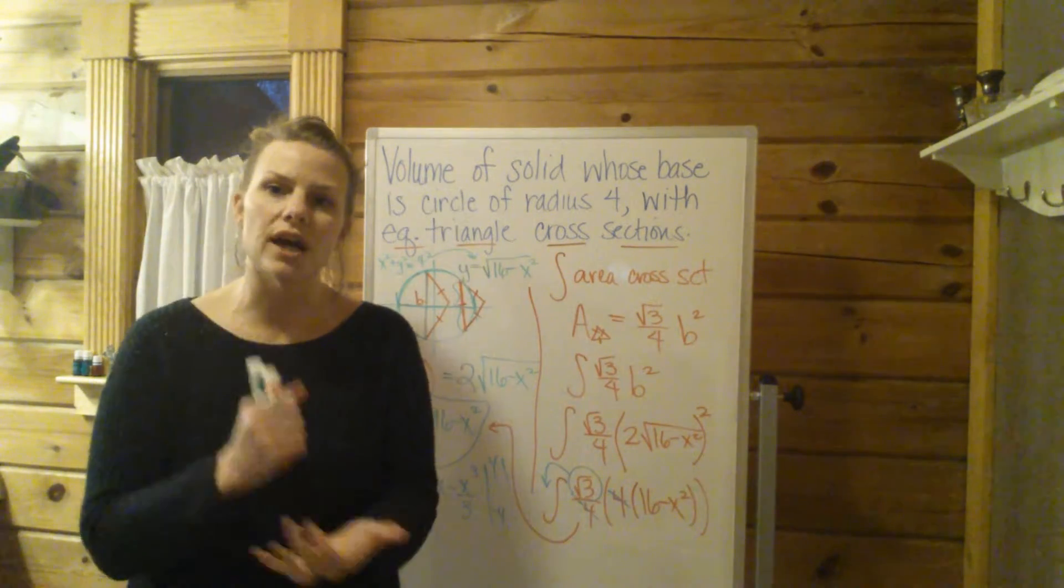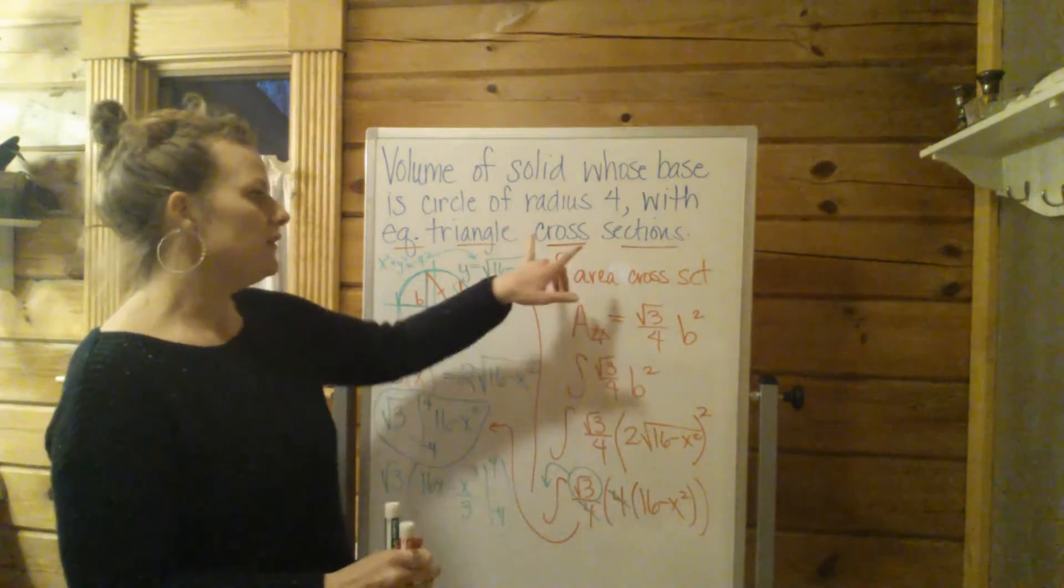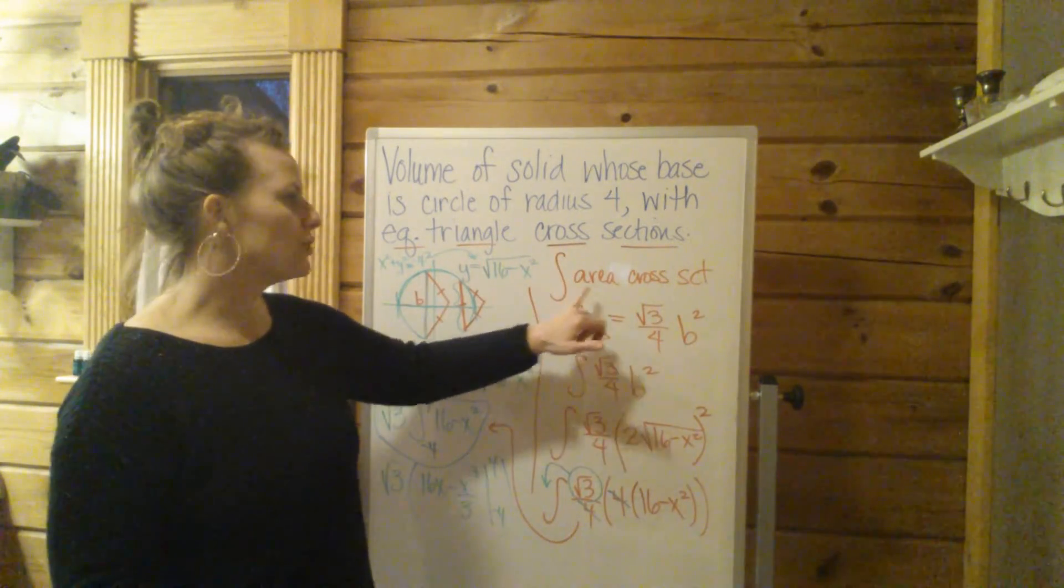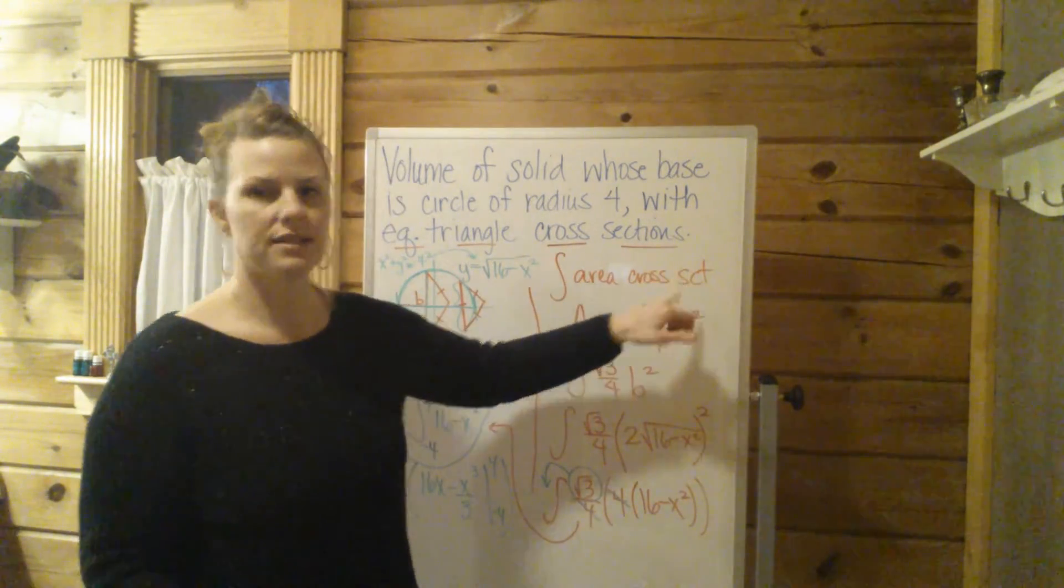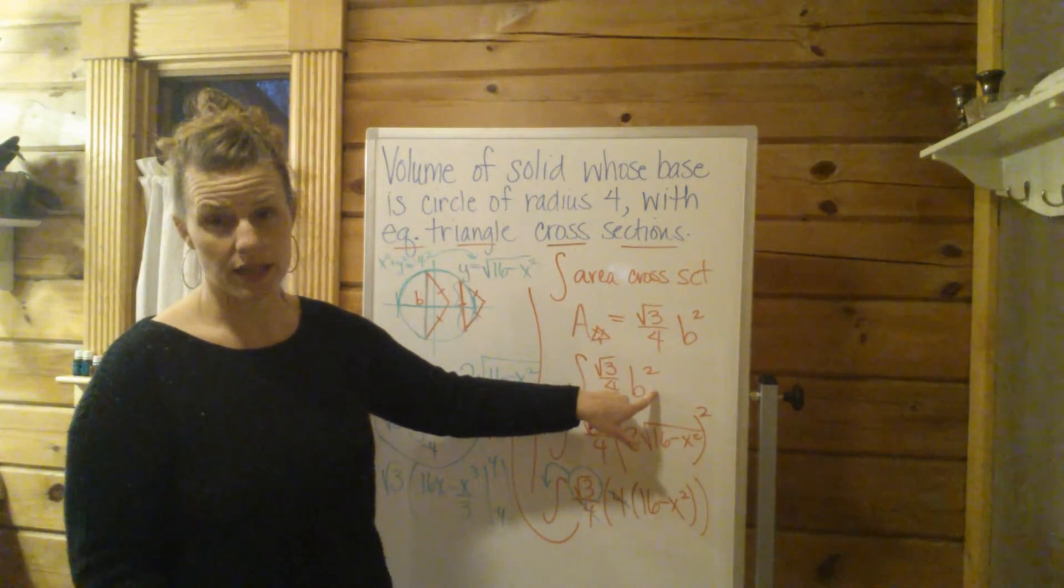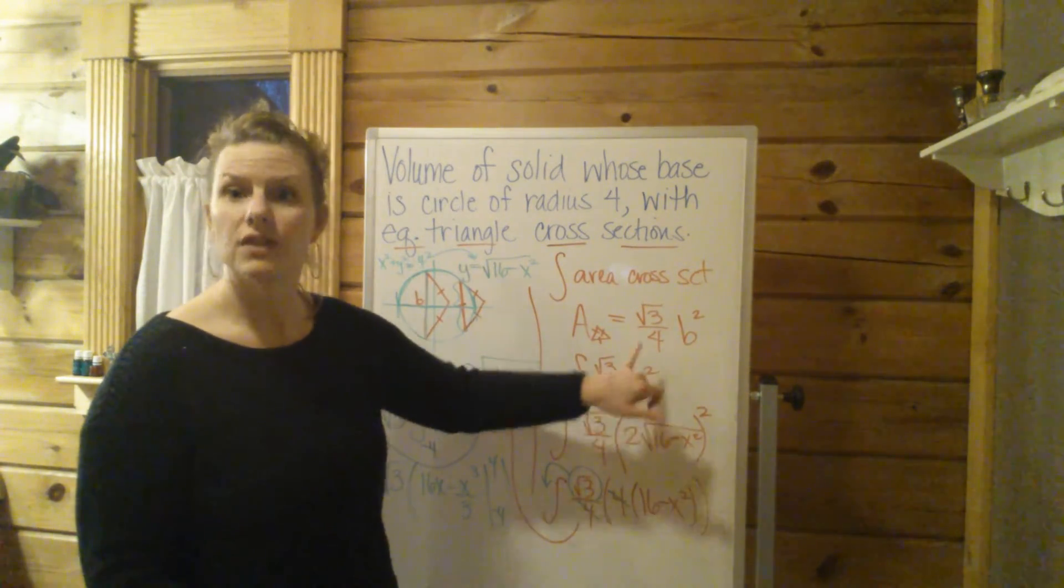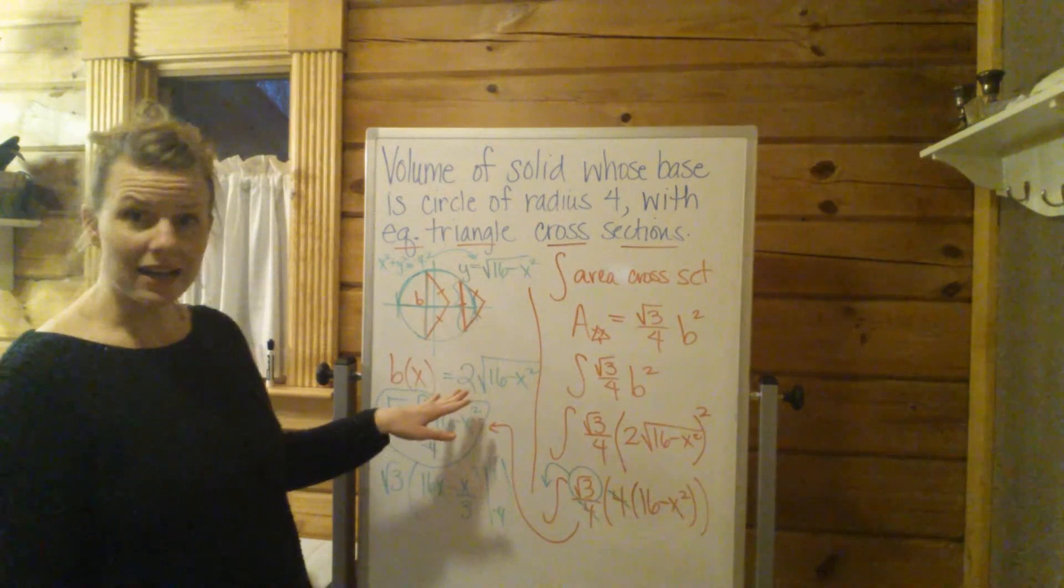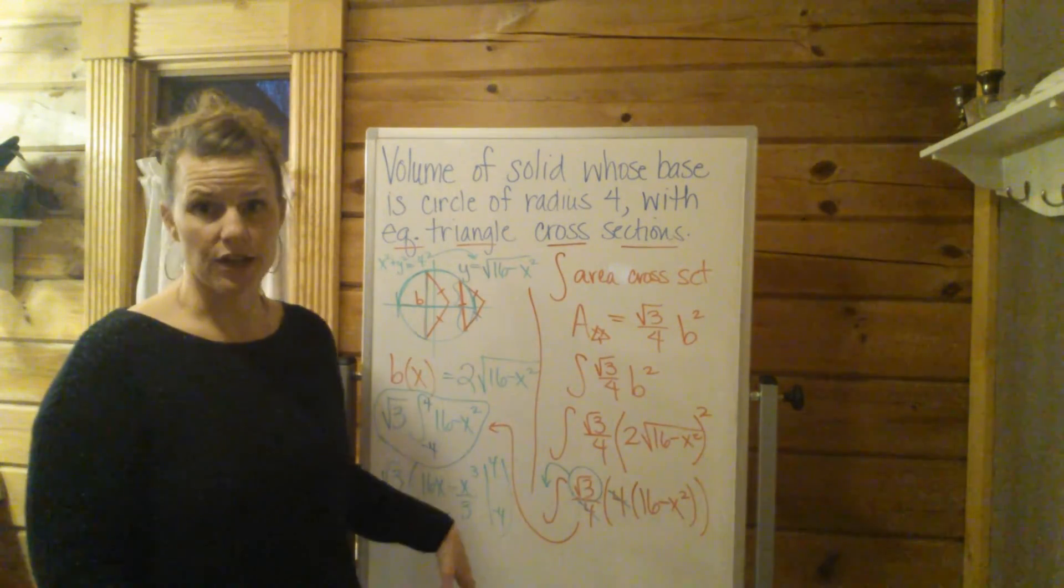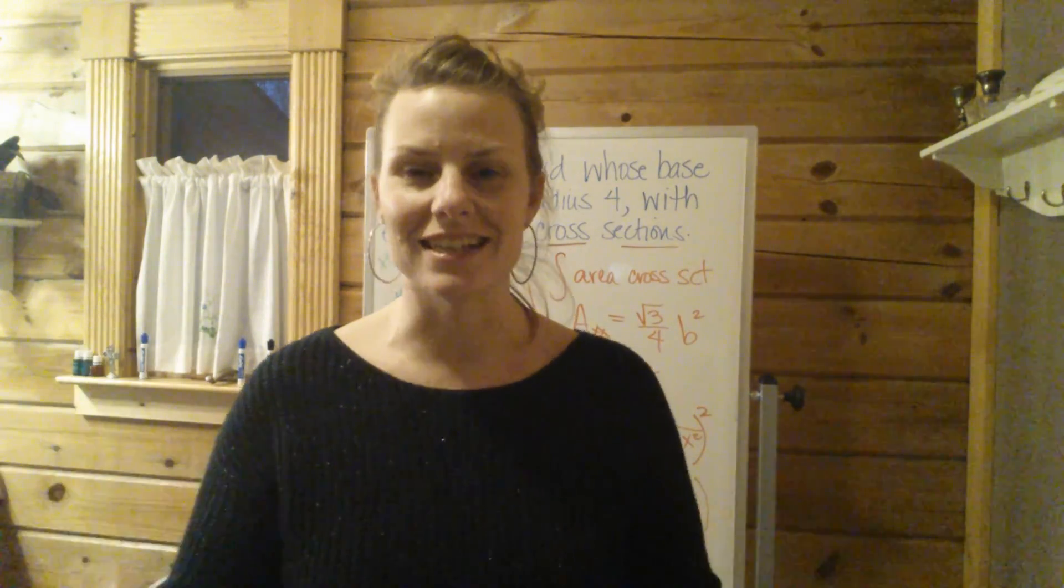I wanted to hit the cross-section volumes because they're a different kind of breed of volume. If you see the word cross-sections, first thing you do, integral of the area of the cross-section. In this case, it was an equilateral triangle formula that you had to plug in there. Represent the base of the triangle in terms of x, plug that in, simplify, and then integrate. So hopefully that makes sense. Leave some comments if you have questions. Thanks.